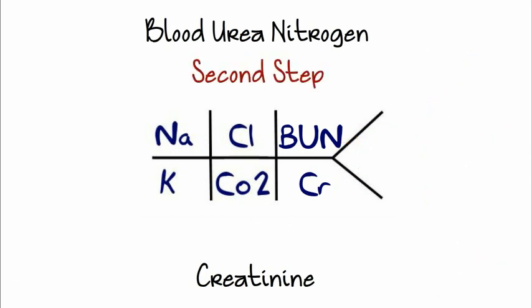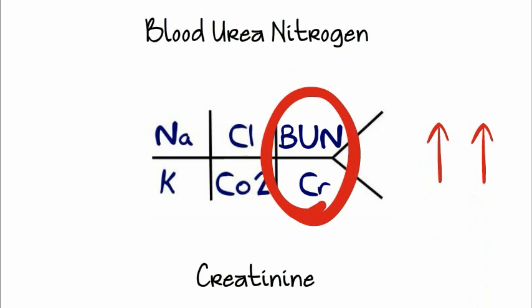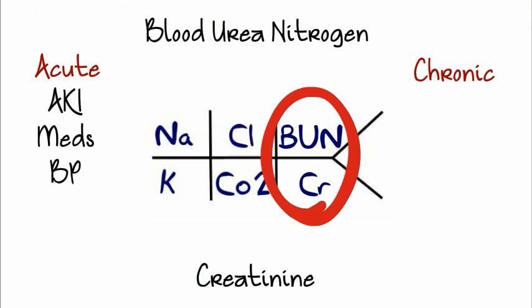And then the second step, we look at the BUN. If that is high, we look at the creatinine. If that is also elevated, we circle both, and we think, is this an acute or chronic condition? Acute injury caused by dehydration, hypotension, or nephrotoxic meds. Or chronic, is a patient a dialysis patient? Or chronic renal disease, a diabetic?